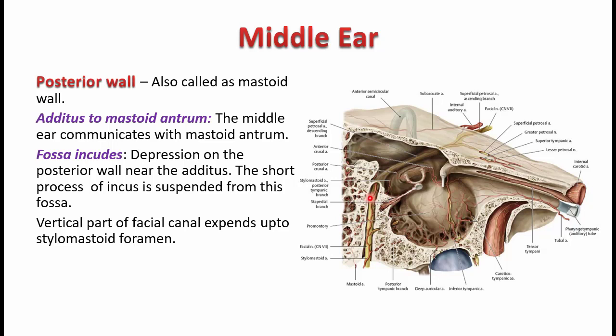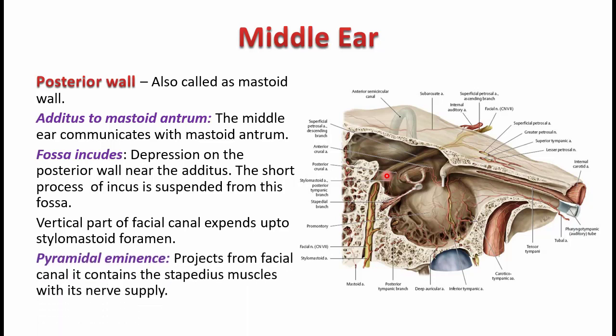You also have the fossa incudis, a small depression near the aditus. The short process of the incus is suspended from the fossa incudis by a ligament. This will be discussed further when we cover the ossicles.